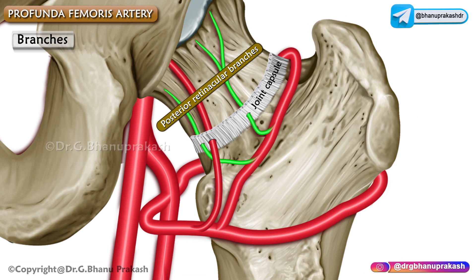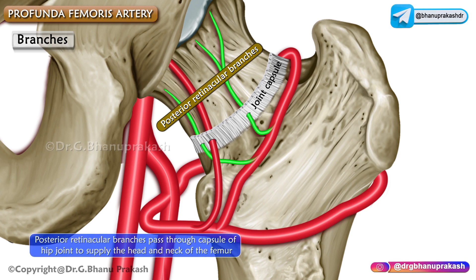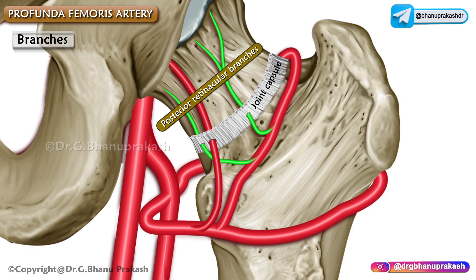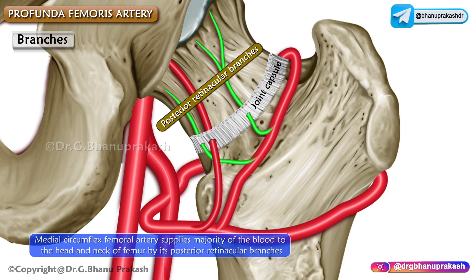The posterior retinacular branches of the medial circumflex femoral artery pass through the capsule of the hip joint and supply the head and neck of the femur. The medial circumflex femoral artery is especially important because it supplies the majority of blood to the head and neck of the femur via its posterior retinacular branches.